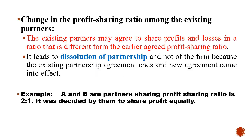Regarding the change in profit sharing ratio among existing partners: the existing partners may agree to share profit and loss in a ratio different from the earlier agreed profit sharing ratio. This leads to dissolution of the partnership and not the firm, because the existing partnership agreement ends and a new agreement comes into effect. But the firm will not close — only the relationship among the partners changes.